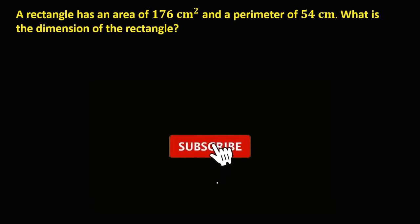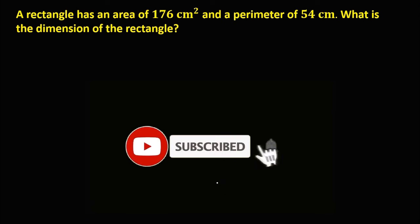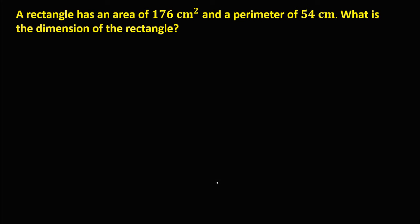Let's solve this problem. A rectangle has an area of 176 cm squared and a perimeter of 54 cm. What is the dimension of the rectangle?